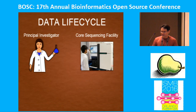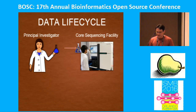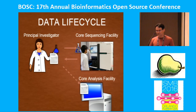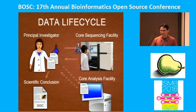Here's a look at the life cycle of genomic data that occurs at GCB. The PI sends a sample to the core sequencing facility. The facility processes the sample on some instrument and returns the data files to the PI. The PI may then send a copy of the data to a core analysis facility for further processing. Finally, the PI publishes their findings in a scholarly journal.